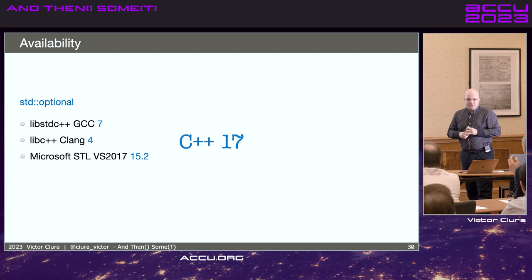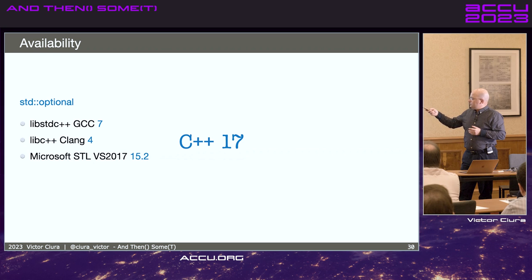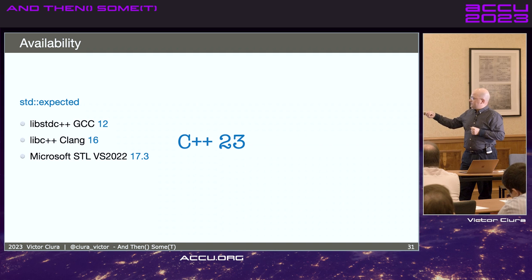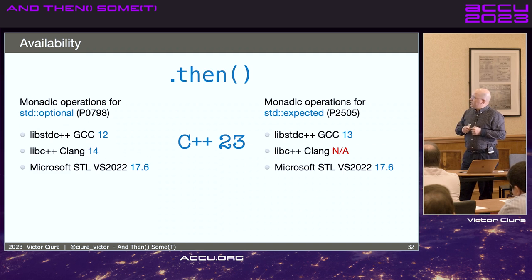If you think about availability, so standard optional, it's not exactly news. I'm hoping a lot of people are using it. GCC 7, Clang 4, MSVC 2017. For standard expected, GCC 12, Clang 16, and Visual Studio 2022 17.3. And this is C++ 23.